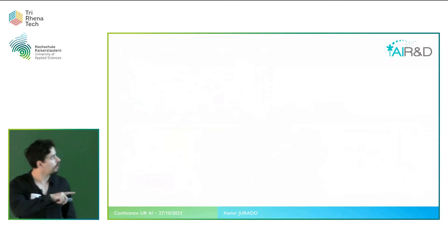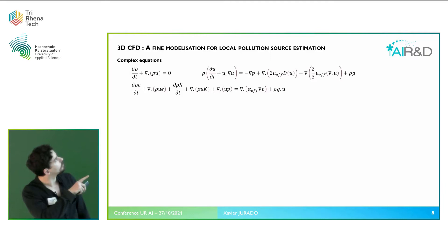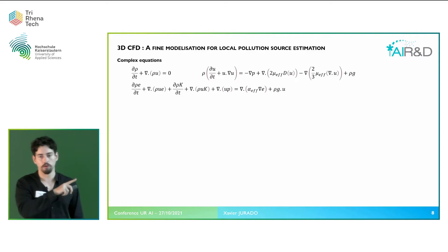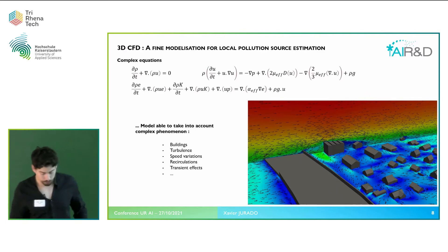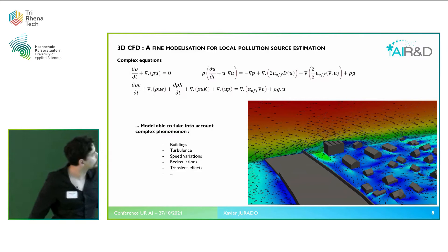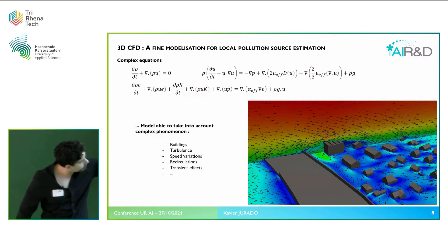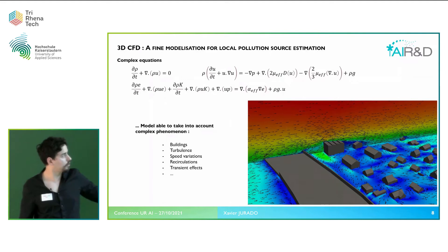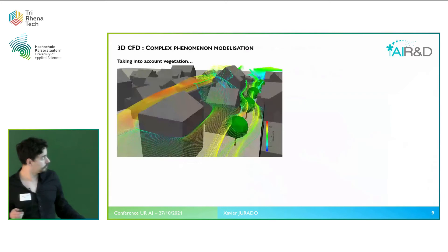What we also have are the CFD models — computational fluid dynamics models. These are more complex models based on fluid mechanics equations, which are the equations that allow us to describe how a fluid behaves, and air is a fluid. They are able to take into account a lot of complex phenomena. As we can see in the image here on the top, there is a variation of air speed, and with the building you can see what is called the street canyon effect — the circulation of air — which is not possible to take into account with a standard Gaussian model.